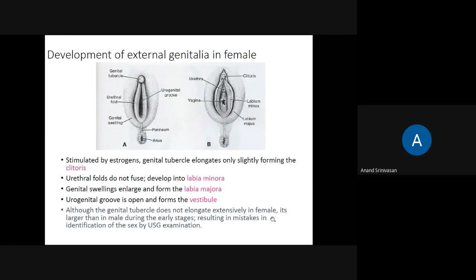Although the genital tubercle does not elongate extensively in females, it is actually larger than in males during the early stages. That is why on ultrasound examination, doctors might make mistakes and identify a female baby as male. A guarded reply is needed — after the 20th week, the anatomy will be more prominent and you can definitively determine the sex, but before that it is quite difficult because the genital tubercle is initially larger in females compared to males.